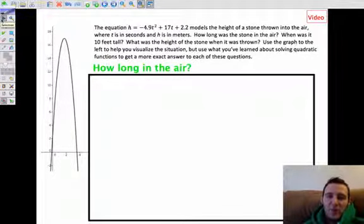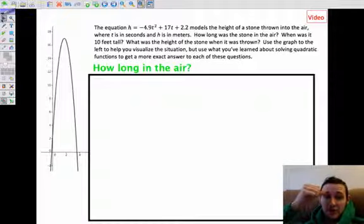This is a projectile motion type problem. You've got this equation: H equals negative 4.9 T squared plus 17 T plus 2.2. And that models the height of a stone thrown into the air. T is seconds that the stone is in the air, and H is meters. H stands for the height of the stone in meters.